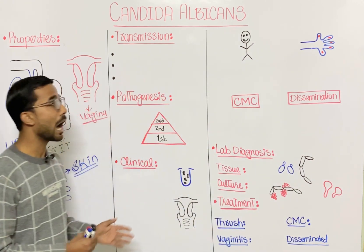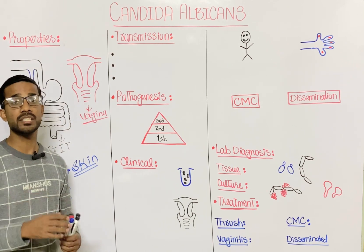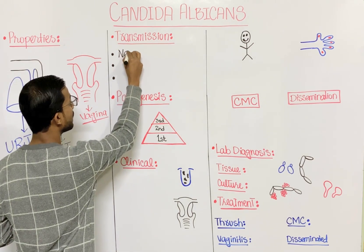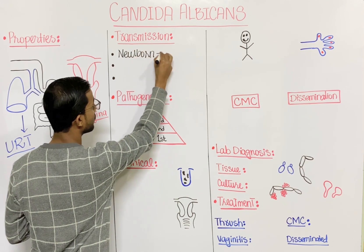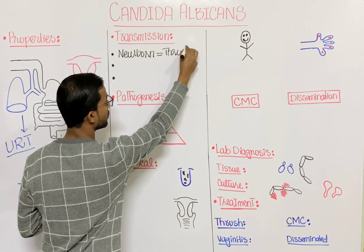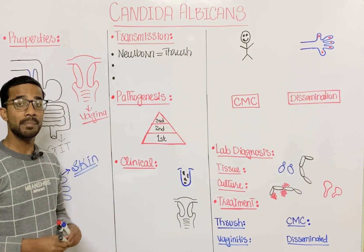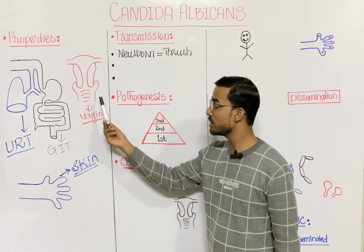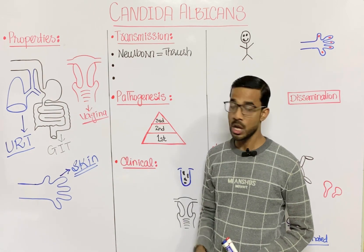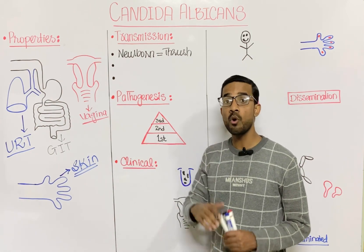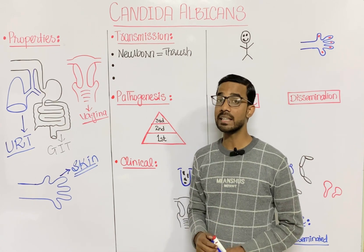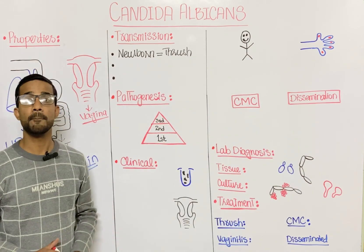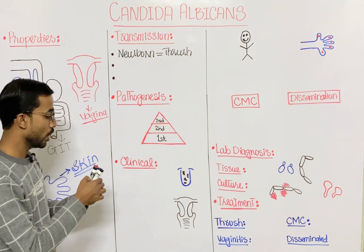Regarding transmission, the first route is the formation of thrush in newborn babies. During delivery, when the baby passes through the vagina — which is colonized by Candida albicans — the baby will most probably acquire Candida albicans, which then causes thrush in the mouth.